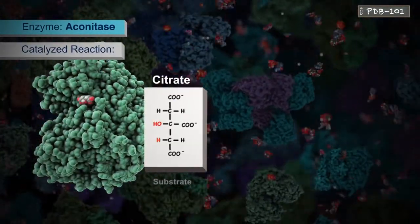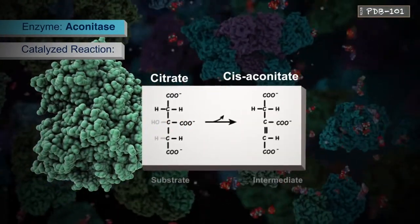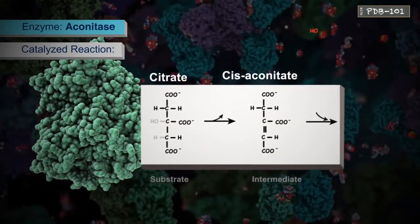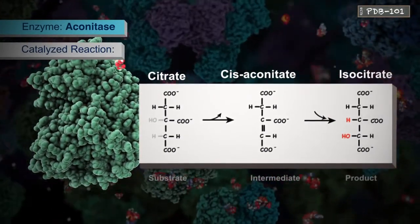Aconitase binds to its substrate citrate and removes a hydroxyl group and a hydrogen atom to form the intermediate cis-aconitate. It then adds the hydrogen and hydroxyl back in slightly different positions to form the product isocitrate.